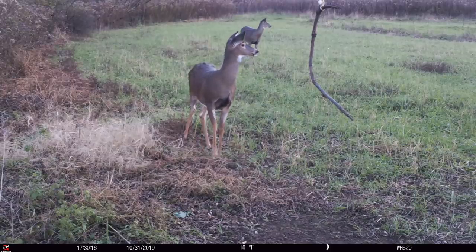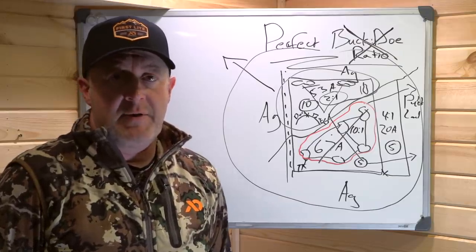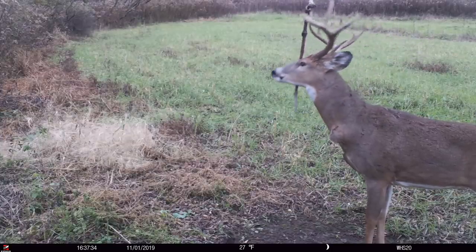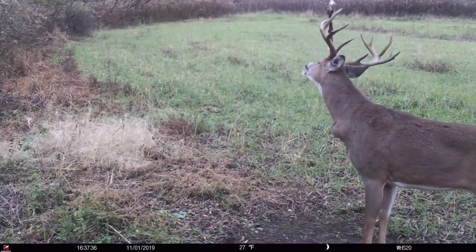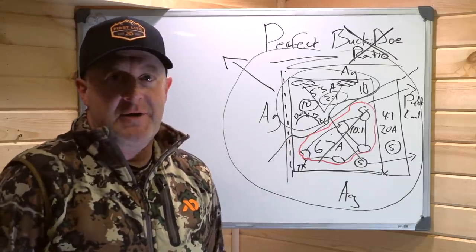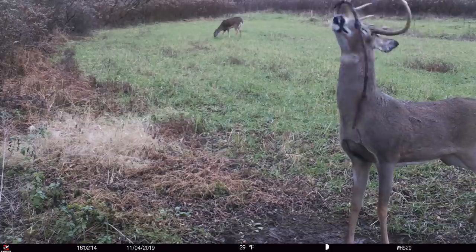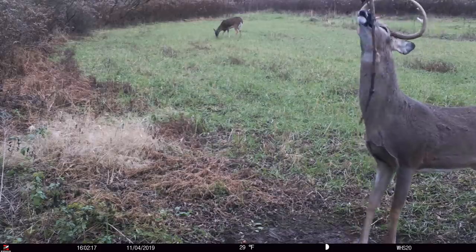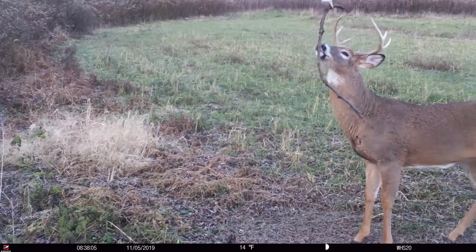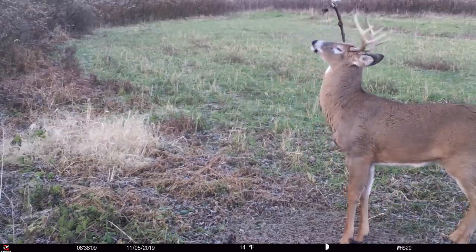In our area, we might see 15 to 25 does and fawns on a certain property every year, and that yields about 25 to 30 different antlered bucks. That ratio is very common across the country. It may not be scientifically or biologically precise, but if you're doing a good job you're going to see an enormous number of bucks pretty equal to the number of does and fawns. But you have to have daylight cover, daylight food, and unpressured habitat.